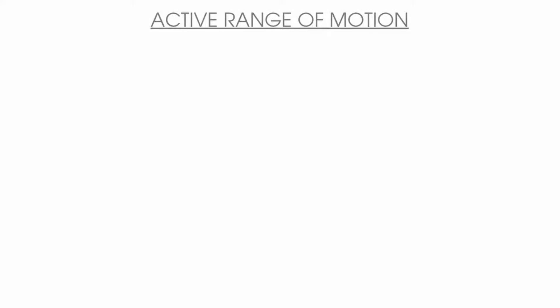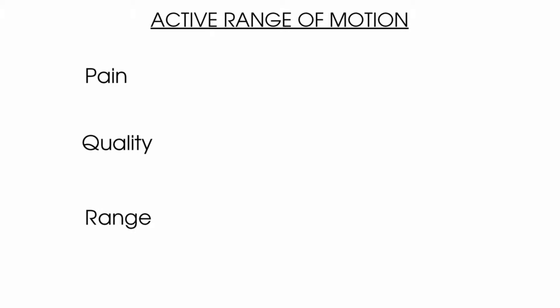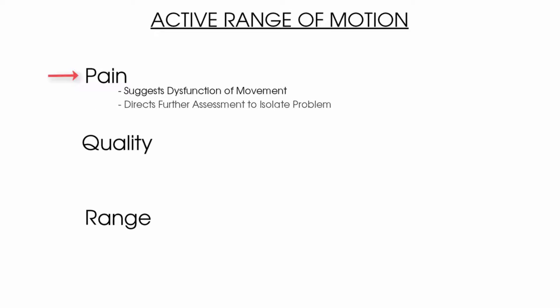When testing active range of movement of any joint we need to consider P, Q and R: P for pain, Q for quality of movement, and R for range of movement. In terms of pain, if pain is present we know that there is a dysfunction within this movement which may be causing our patient's problem and will likely direct further testing to this area to try and isolate the source of the pain. If pain is not elicited, the therapist can move on to the next stage. For example, if there is no pain on active lumbar spine movements during a hip examination, the lumbar spine can be ruled out of the initial investigation.